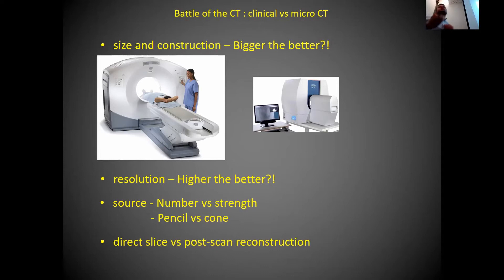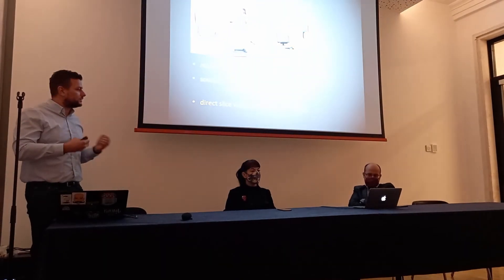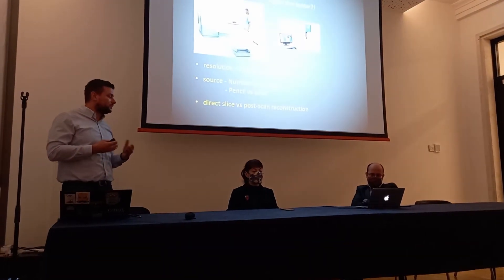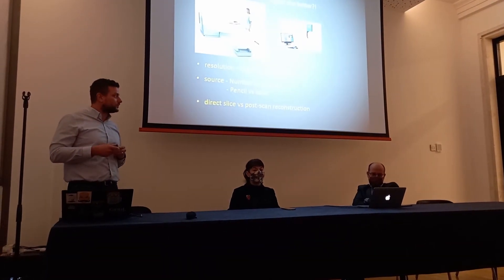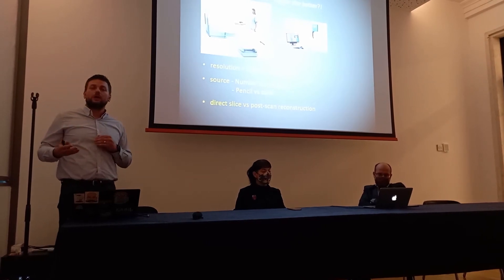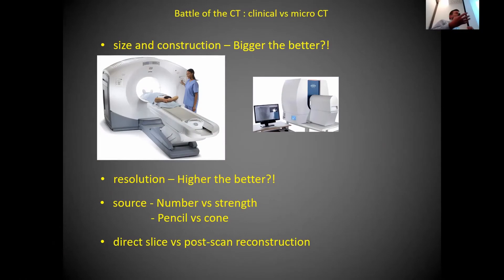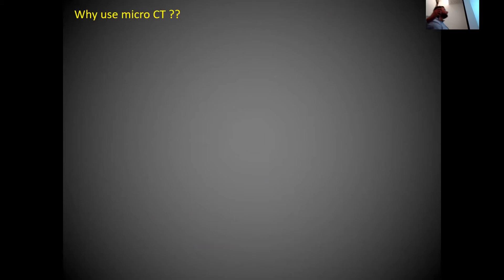Another difference is in reconstruction. With clinical CT you get reconstruction virtually in real time — as it's being scanned it's almost simultaneously reconstructed. With micro-CT you have to scan first and then reconstruct; you cannot see the reconstructed data right away.